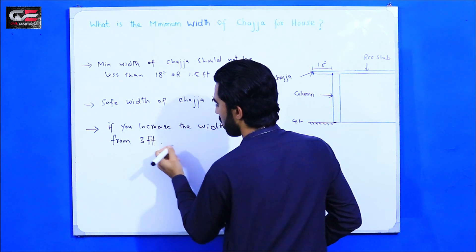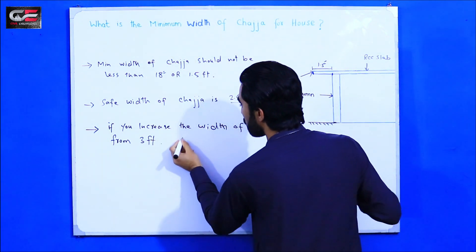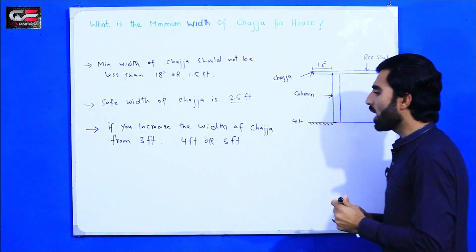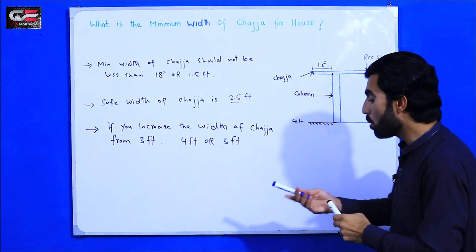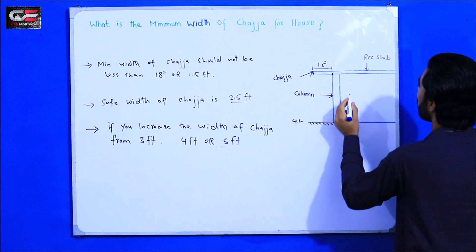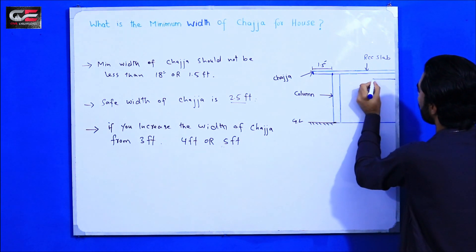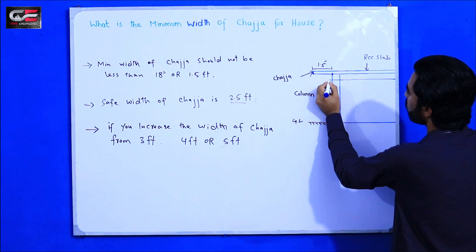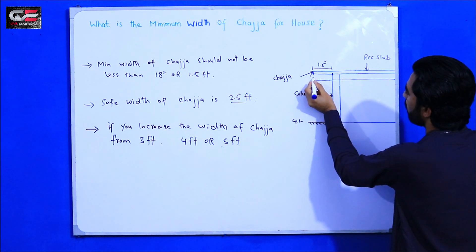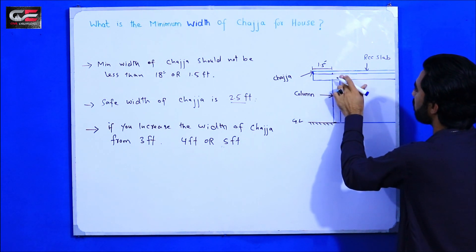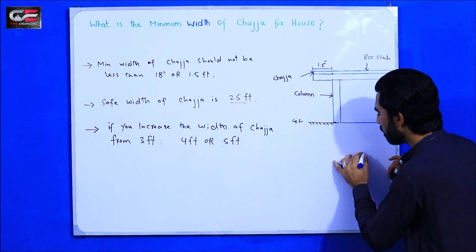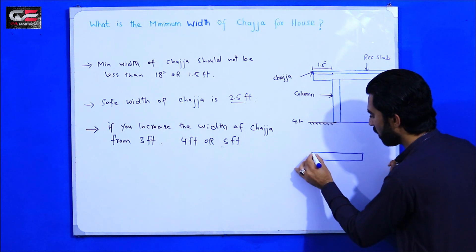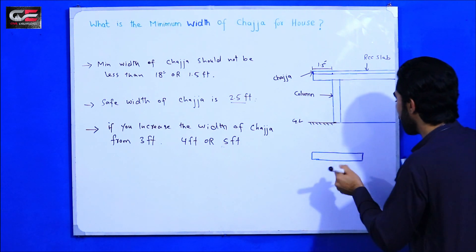If you need more than three feet — for example four feet or five feet — here are some tips on how you can increase this. We have a top beam here, and the top beam is designed for the chadja. For example, if the depth of the beam is 12 inches at the support, this beam should be specifically designed to carry the wider chadja.